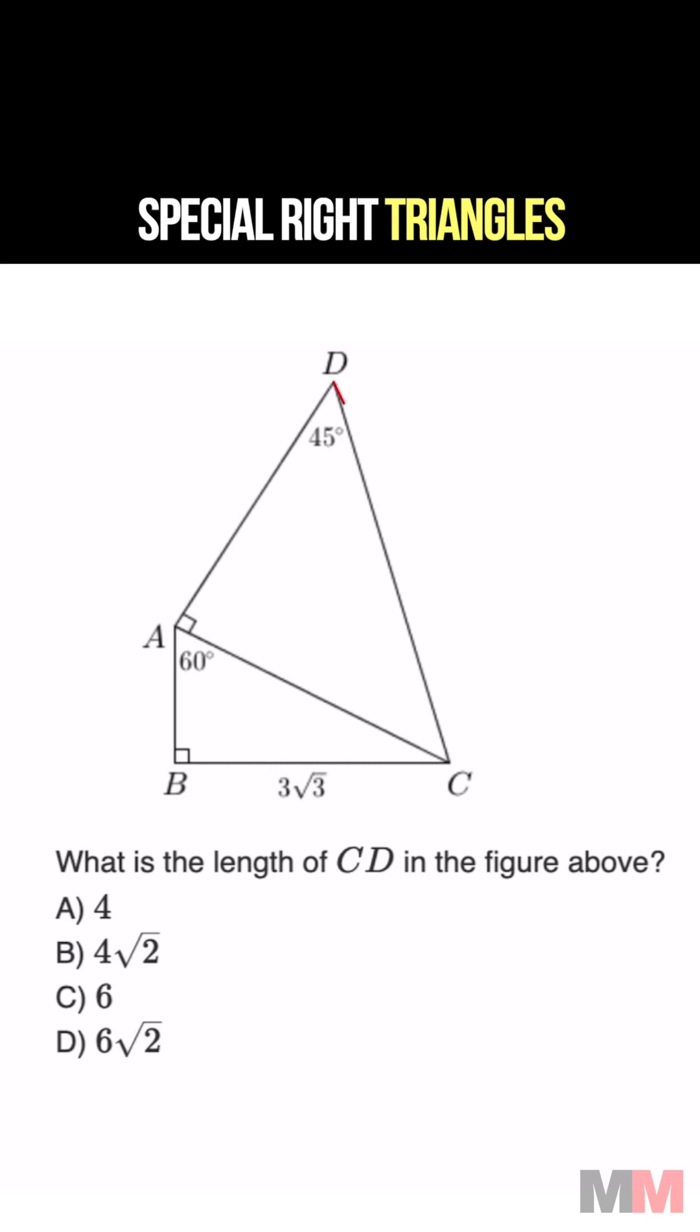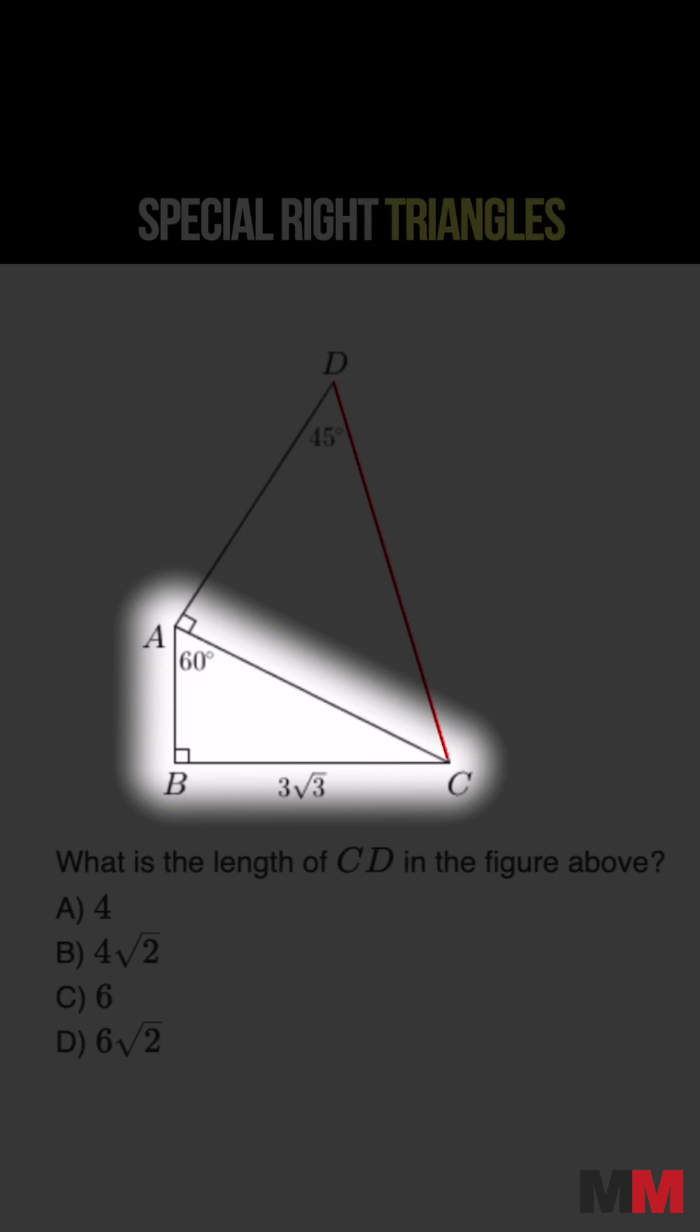In this question, we are trying to find the length of CD. So we're first going to start in this triangle right here. We're given that this is 60 degrees and this is 90, meaning that this can only be 30 degrees.